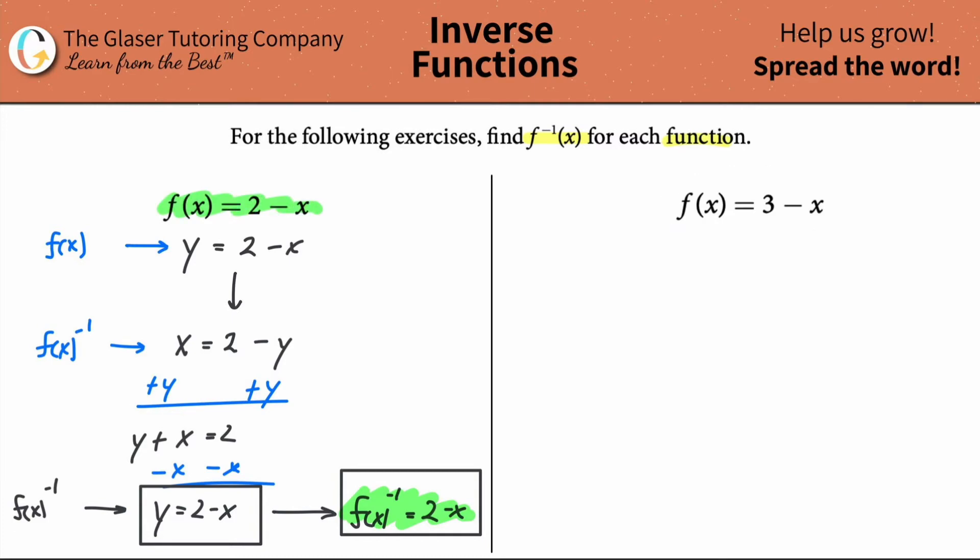So let's run through the second example. Watch how fast we can do it. So first thing is turn this into just y, 3 minus x. Then write x here and write y there.